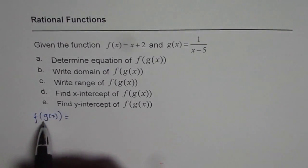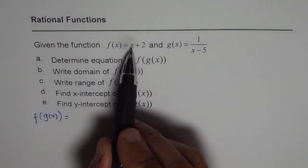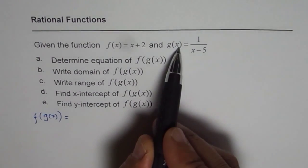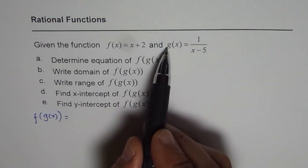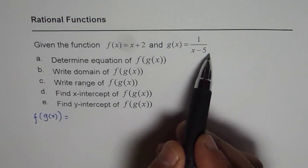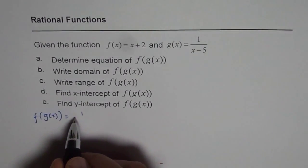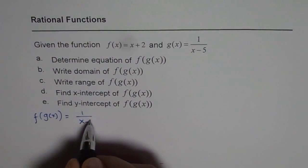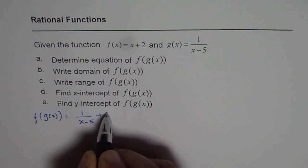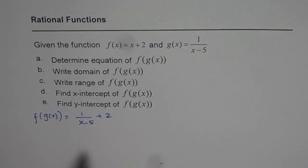f of g of x is replace x with g of x. So x will be replaced by 1 over x minus 5. So we'll get this as 1 over x minus 5 plus 2. I hope that's clear to you.